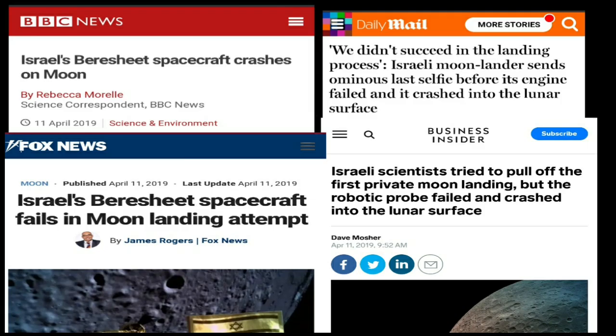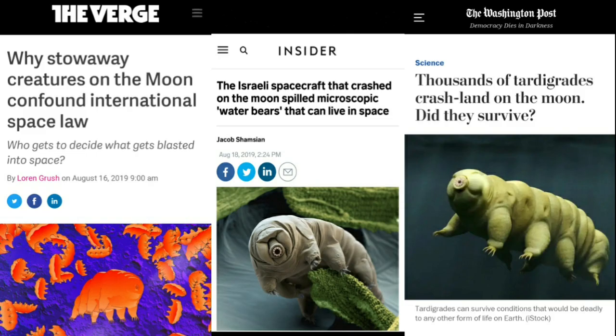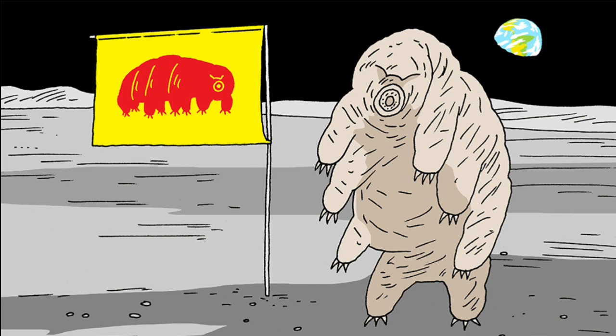According to reports, the lander was carrying a crate containing thousands of tardigrades, and they spilled on moon's surface after the crash. Interestingly, they survived on the moon's surface for months.